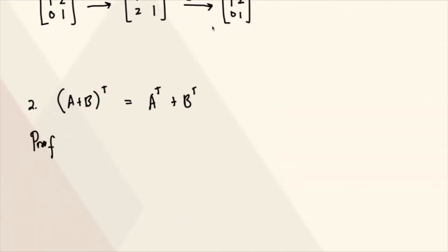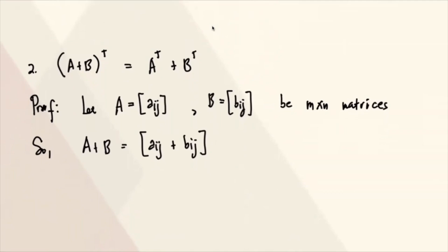How do we do that? Sige nga, i-prove natin ito. So let A be equal to Aij, and then yung B natin, Bij. So of course, hindi naman siya magiging valid, no? Pag they don't have the same size. So B, M by N matrices. So pareho sila ng size, M by N. So if you take the sum, A plus B, di ba ang sum natin, ano lang tayo nag-a-add nam tayo ng per entry? So that means this is Aij plus Bij.